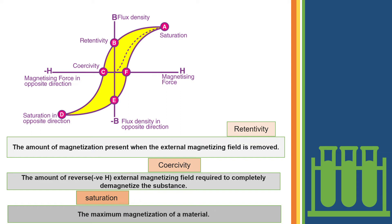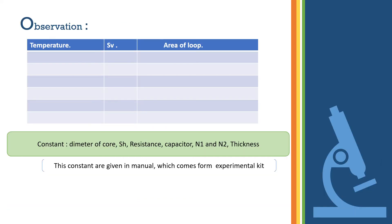We see in the graph, which is four-quadrant, the magnetizing force H is on the x-axis and flux density B is on the y-axis. In this experiment, we observe temperature, SV, and area of the loop.